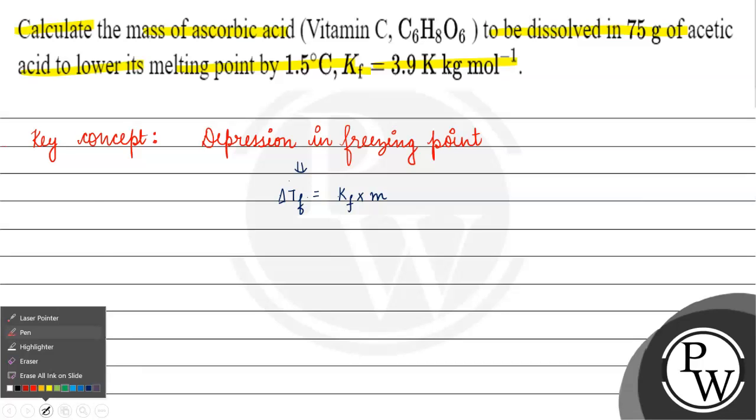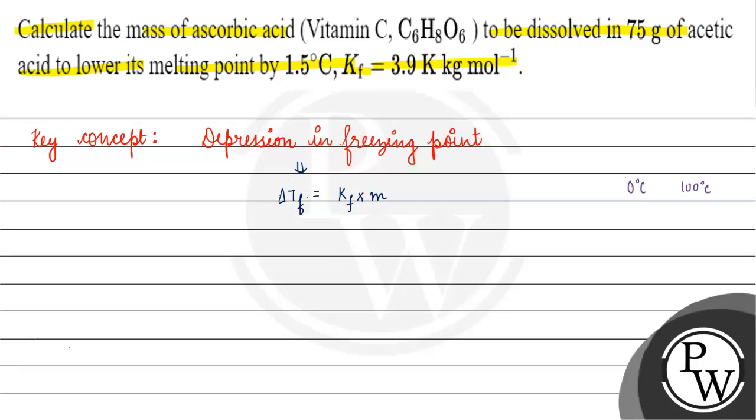Now, ΔTf is 1.5 degrees Celsius. If we have 0 degrees Celsius and 100 degrees Celsius, the difference is 100 degrees Celsius. If we take 273 Kelvin and 373 Kelvin, we have 100 Kelvin difference.